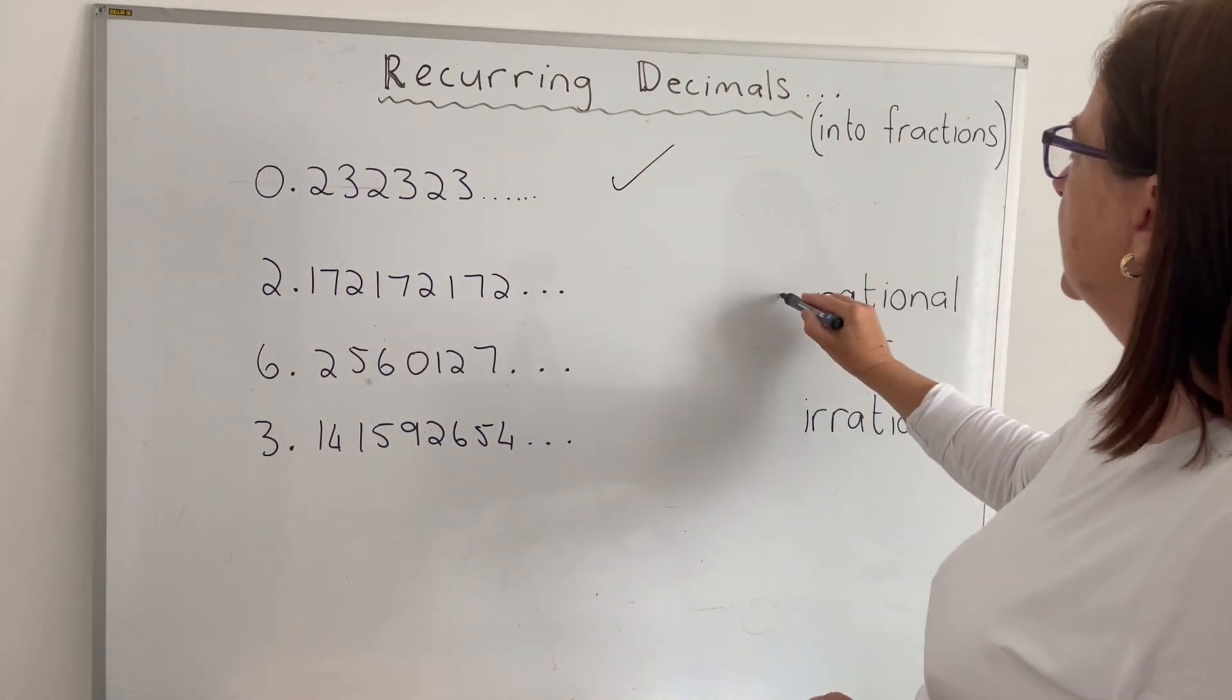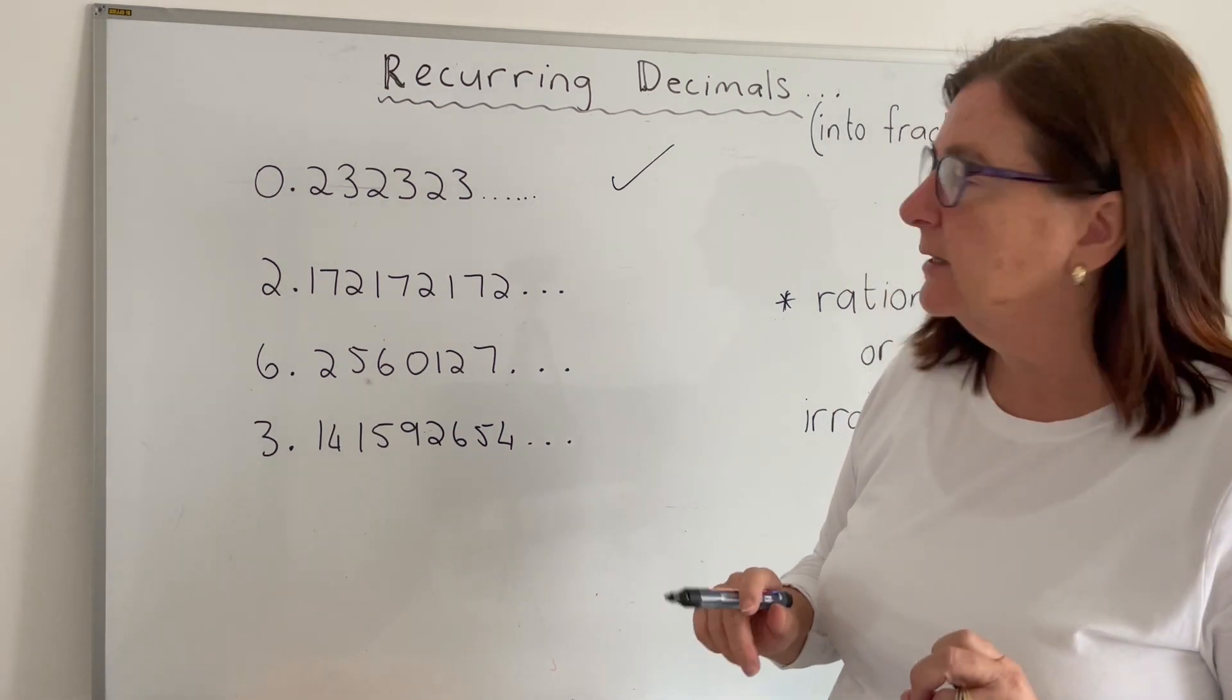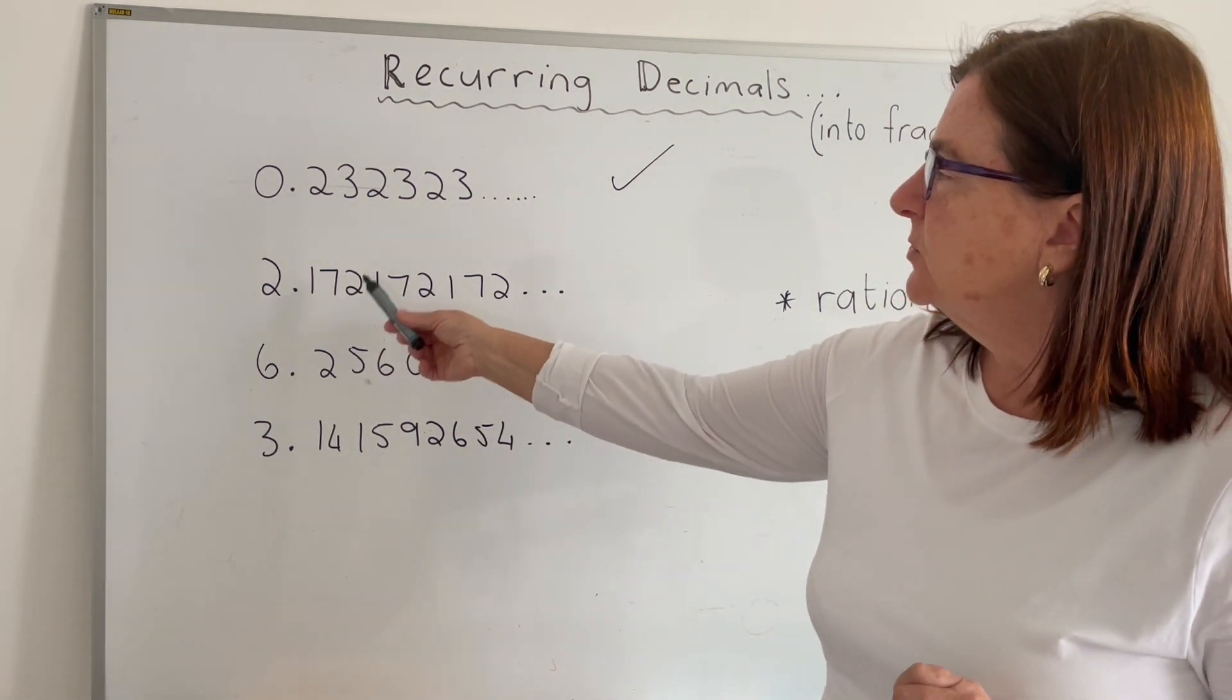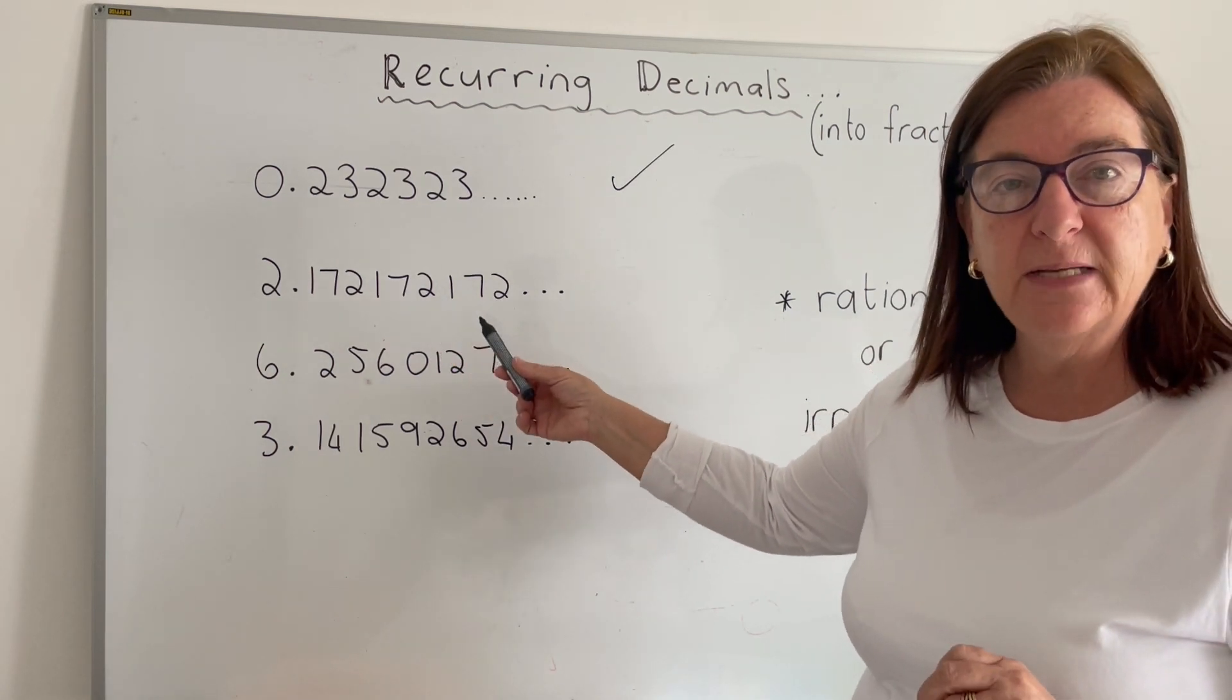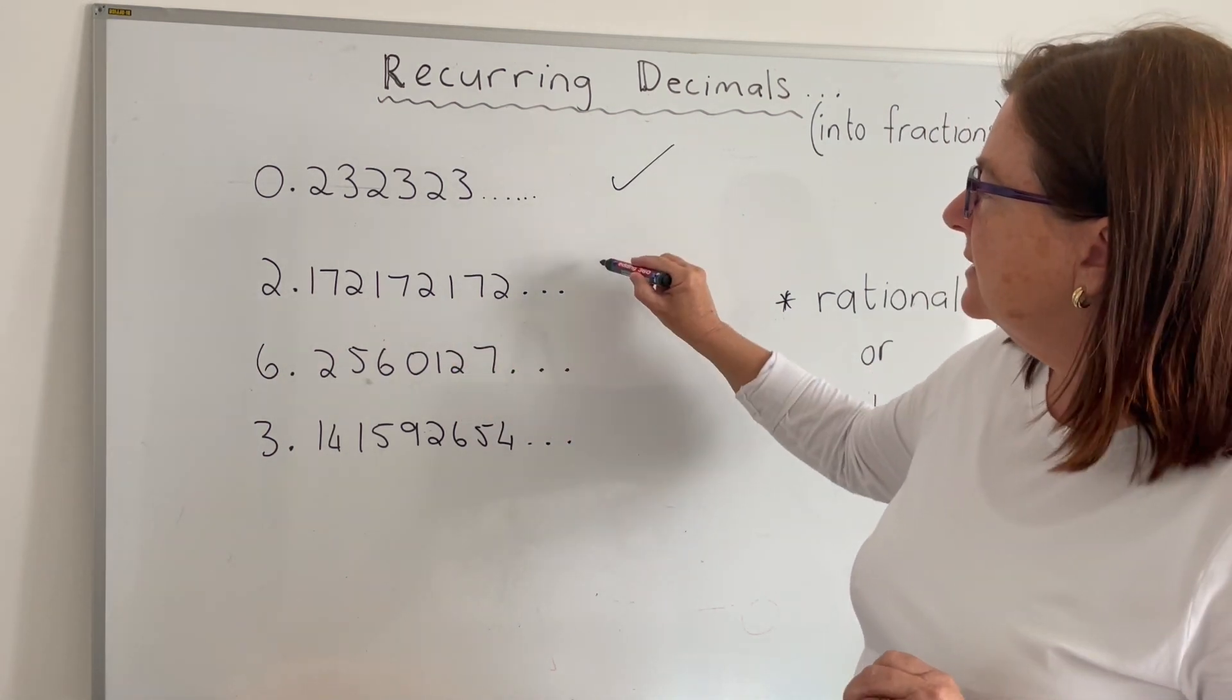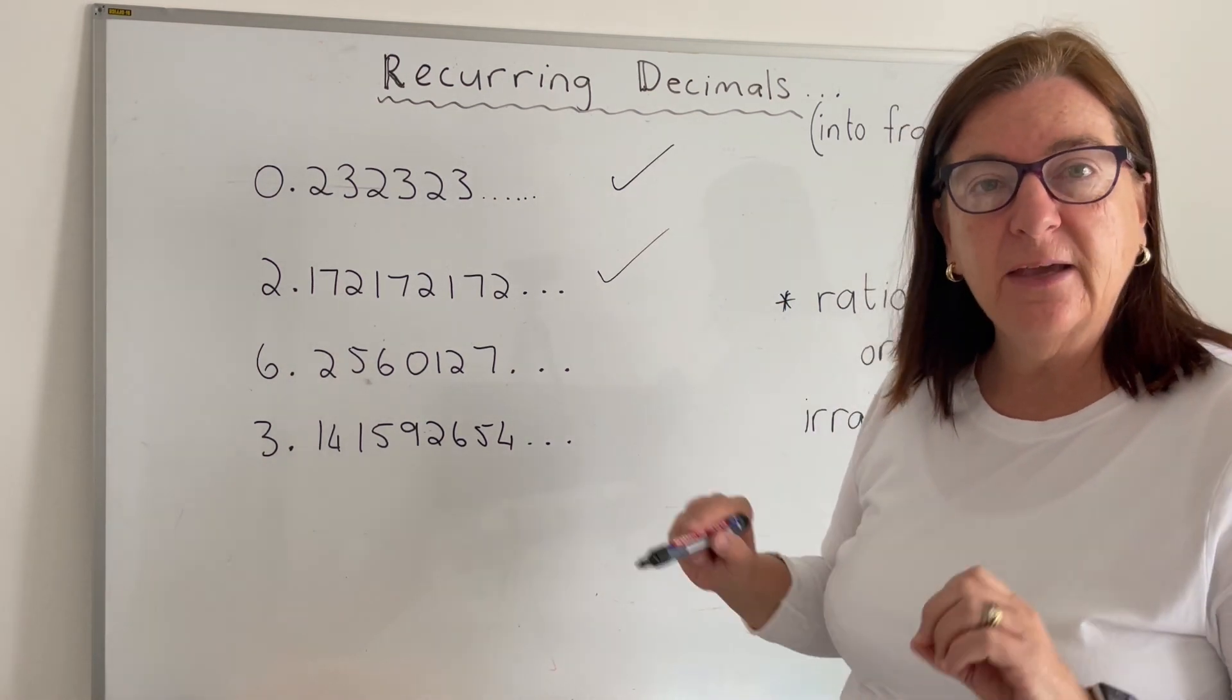Second one, 2.172172172. That's also recurring. The 172 is repeating, so that is also able to be converted into a fraction and therefore it would be considered a rational number.